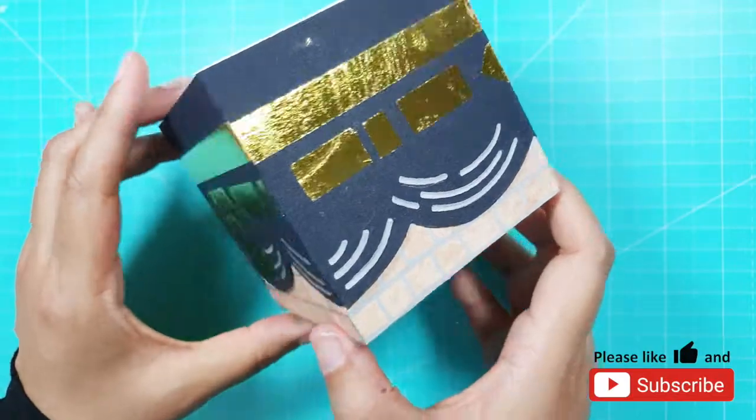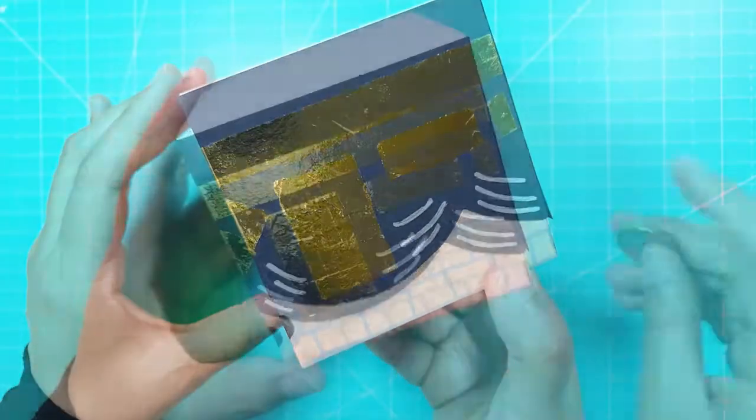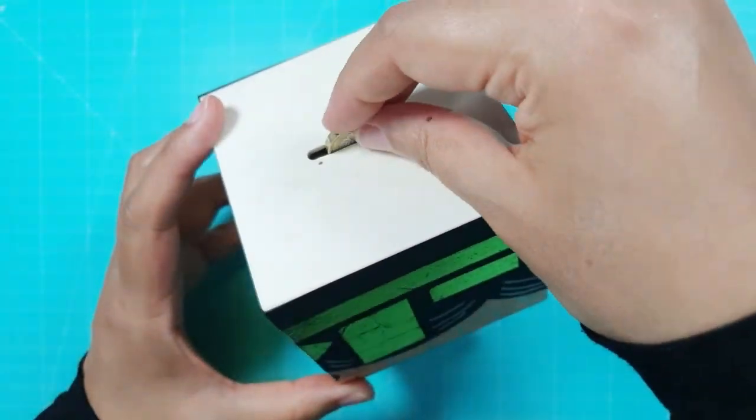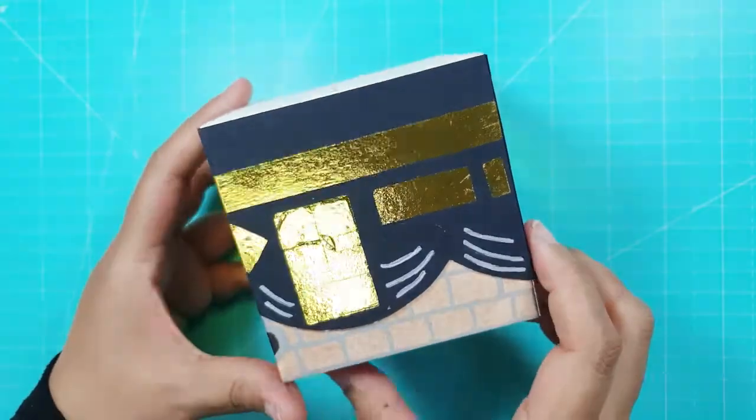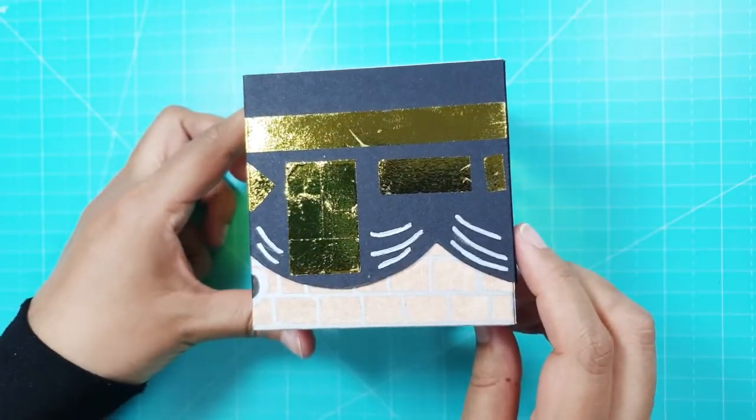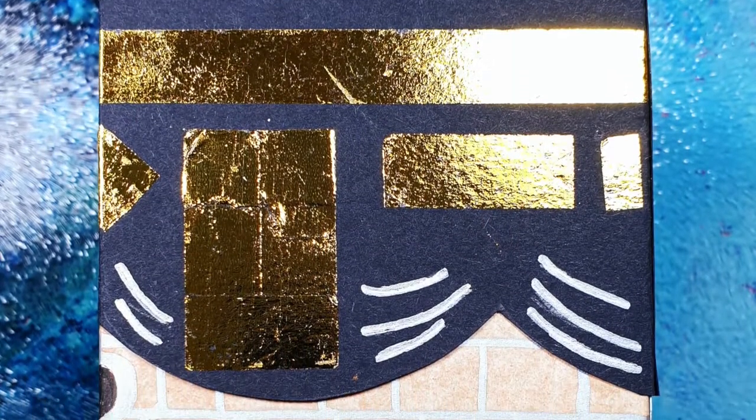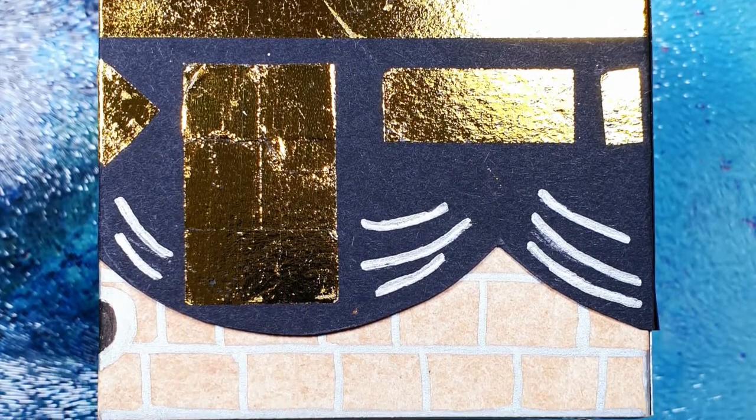In this video I'm going to show you how to make this Ka'bah Sadaqah box inspired by verse 96 of Surah Ali Imran which says most surely the first house appointed for men is the one at Bakr blessed and a guidance for the nations.